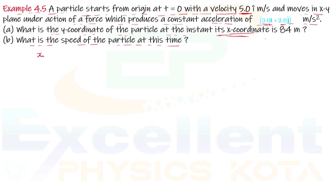If you look at it, basically we have two-dimensional motion — one is the x-direction and the other is the y-direction. We have two-dimensional motion with constant acceleration. The advantage of constant acceleration is that we can write: x = u_x·t + ½·a_x·t², and y = u_y·t + ½·a_y·t².